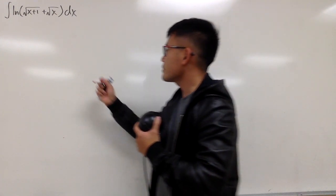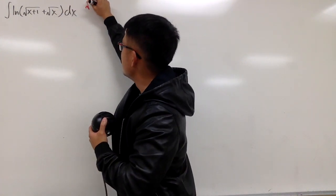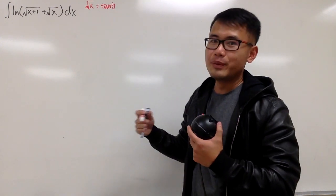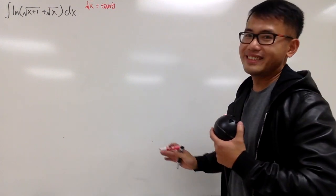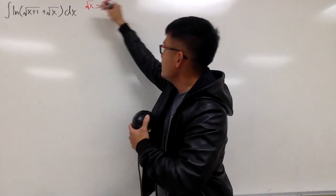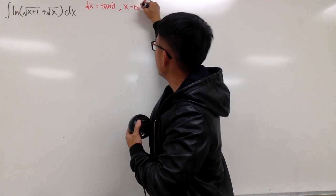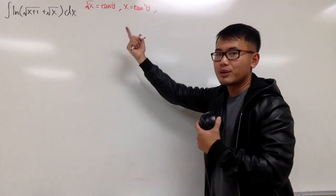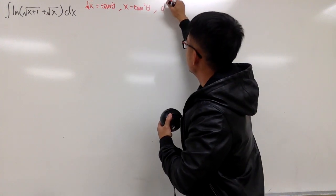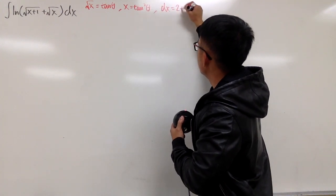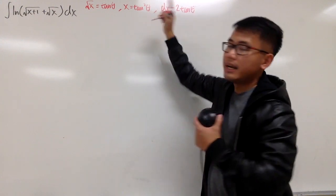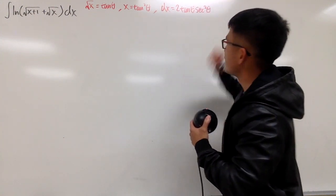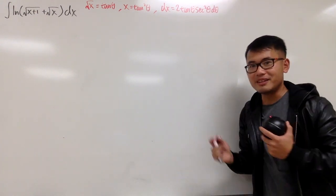Here is the approach. Let's go ahead and let square root of x equal tangent theta, and work everything in the theta world first. Squaring both sides gives x equals tangent squared theta. Differentiating both sides, dx equals 2 tangent theta times secant squared theta d theta.